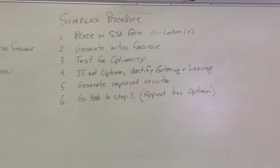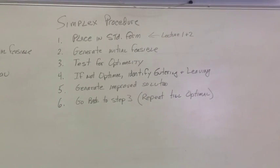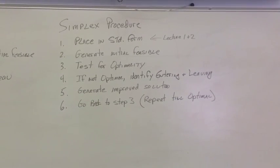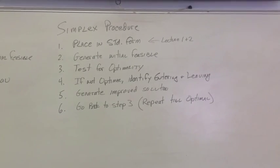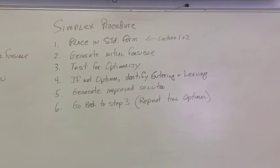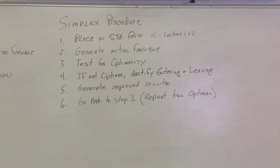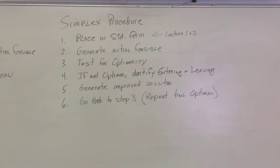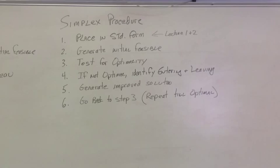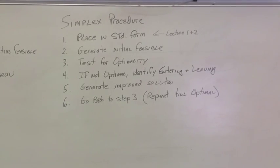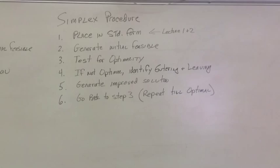Step four, we check if it's not optimal, we have to identify which is the next point we're going to. We do that by identifying the entering and leaving variables. From there we generate an improved solution. And basically step six is we keep repeating three through six until we get to the optimal solution.